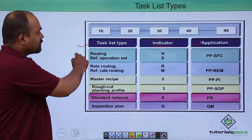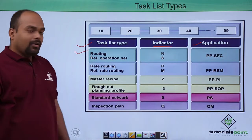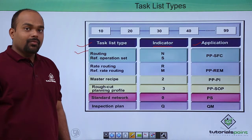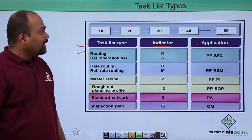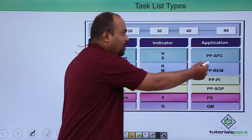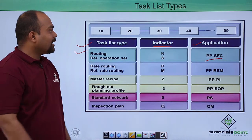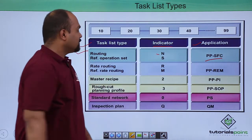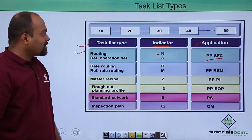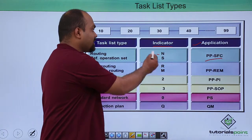Routing is used in shop floor control of production planning. Indicator is N for routing and reference operation set indicator is S.